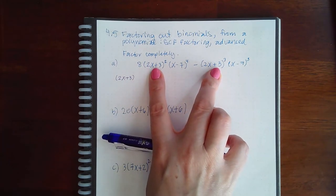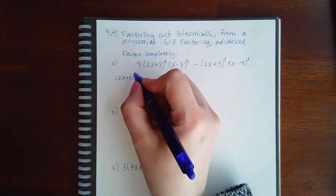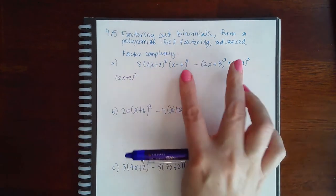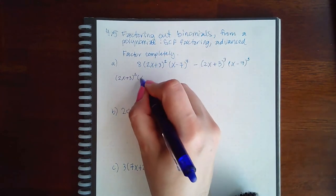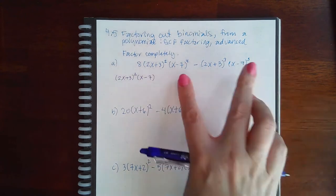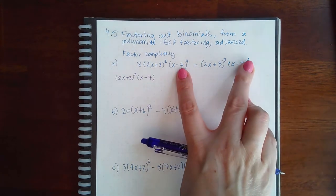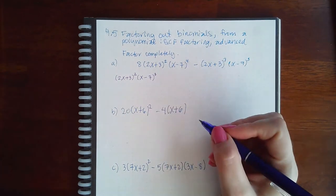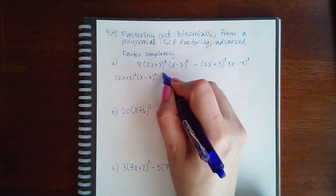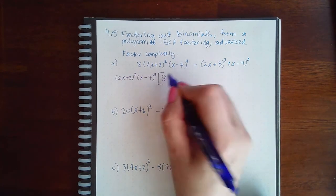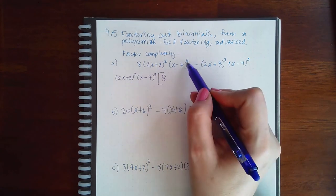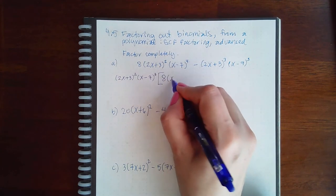But you always have to go with a smaller exponent, which means I have to go with the 2. Then they also have an x minus 7, so I could take that out, but again I have to go with the smaller exponent, which means I can only take out three of them or the cube of it.